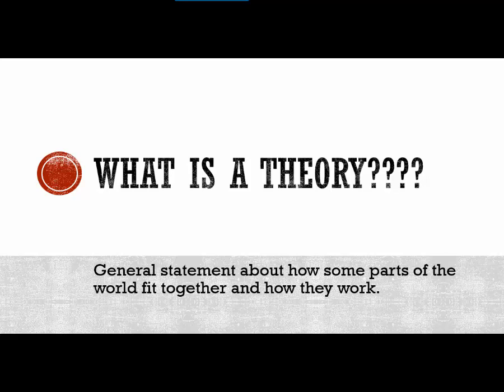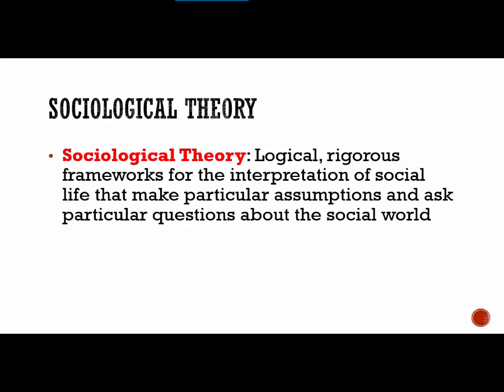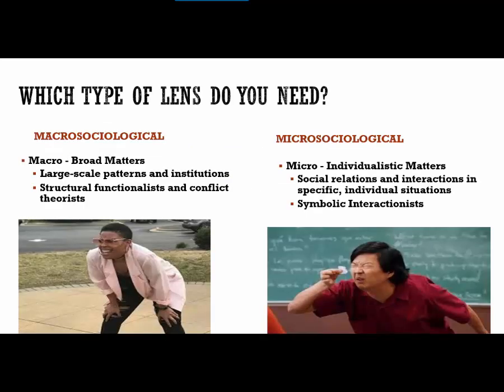A theory is a speculative statement about how you imagine the world works. For sociological theory, think about these as logical frameworks for the interpretation of social life that make particular assumptions and ask particular questions about the social world. Before we get into the three primary frameworks, I want to introduce two terms: macro sociological and micro sociological.